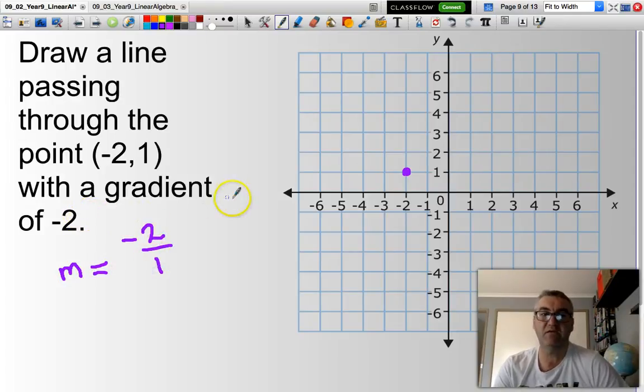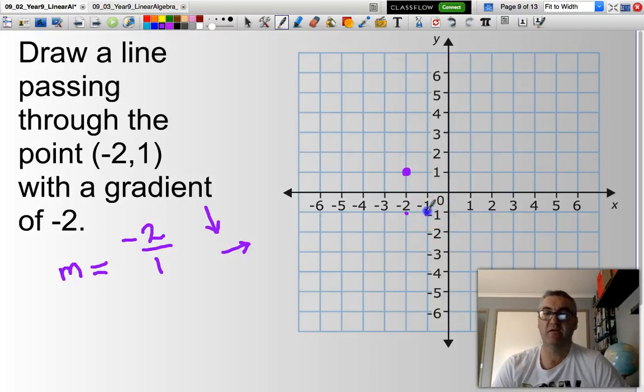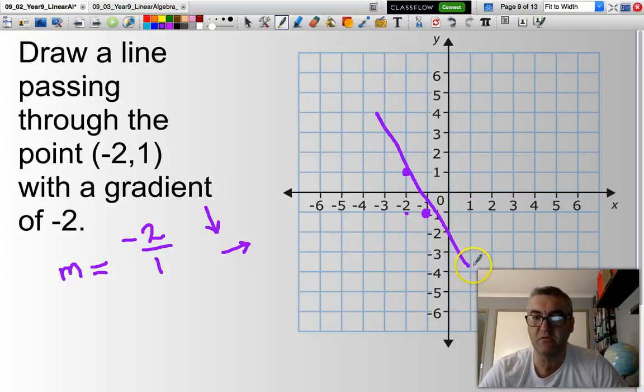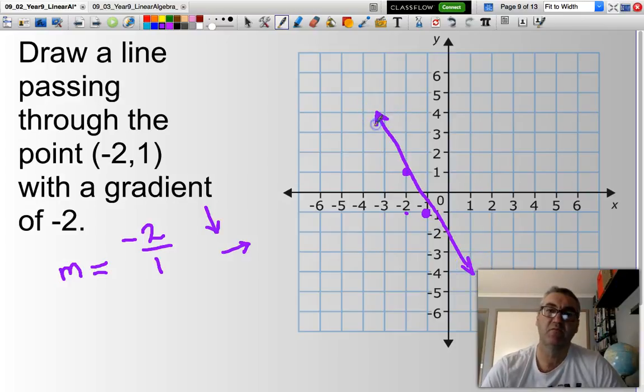Negative indicates I'll be going down and across. So here we go. I'll go down 2: 1, 2. It gives me that. Then I'll go across 1. So that is my second point. All I need to do now, draw a line that goes through those points. I really should be drawing a bit straighter line, but you get the general idea. That line should go through that point there.